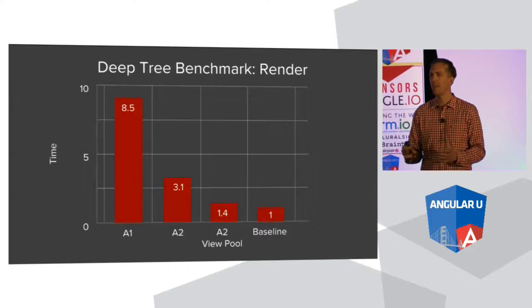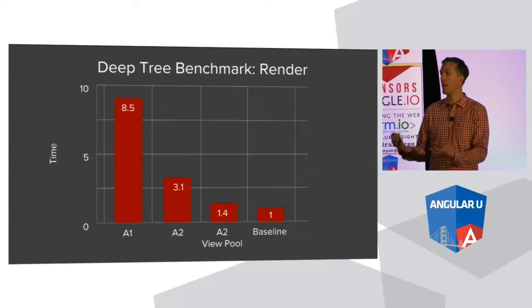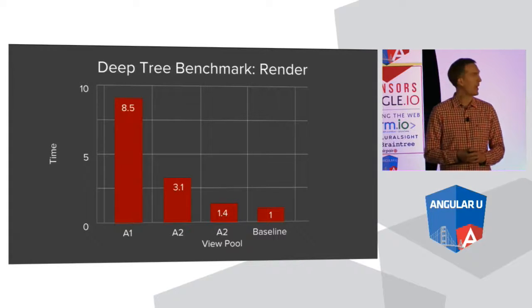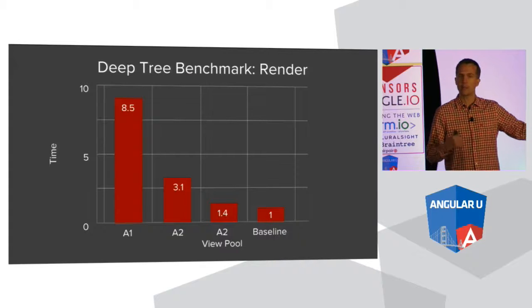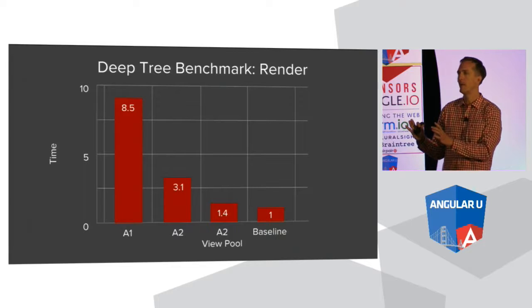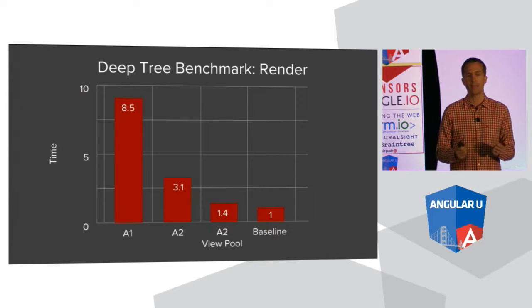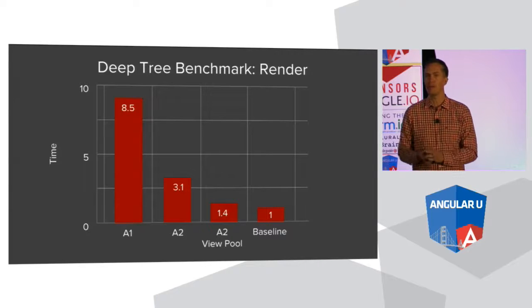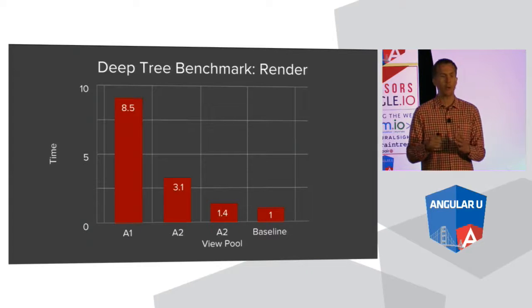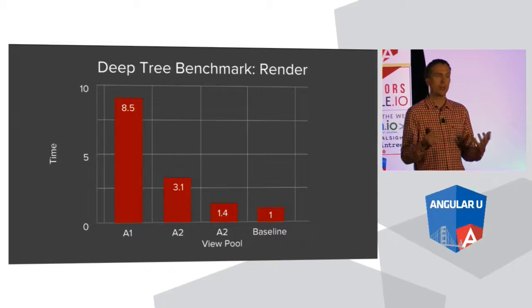We have a graph of a benchmark called DeepTree, which is meant to simulate what one of your applications is going to behave like for a user. The baseline is hand-tooled JavaScript using every trick we knew to make it perform well. Angular 1.3 is about a little over eight times slower than the baseline. Angular 2 out of the box — the 3.1 number — we're almost three times faster than Angular 1. This reflects how fast your application renders for the first time for the user.